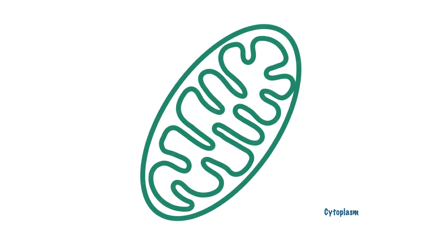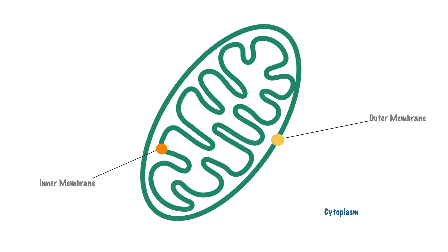The electron transport system or chain occurs within the mitochondria. The mitochondria has several components: the outer membrane, which acts as a protective barrier regulating entry — permitting smaller molecules while larger molecules enter via specialized protein channels. The inner membrane is a phospholipid bilayer forming what we call cristae. Between them is the intermembrane space. The innermost component is the mitochondrial matrix, a gel-like substance containing enzymes, DNA, ribosomes, and other important molecules.